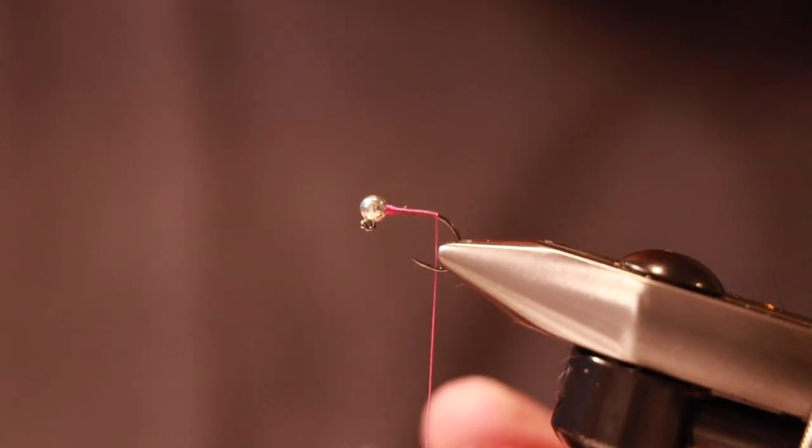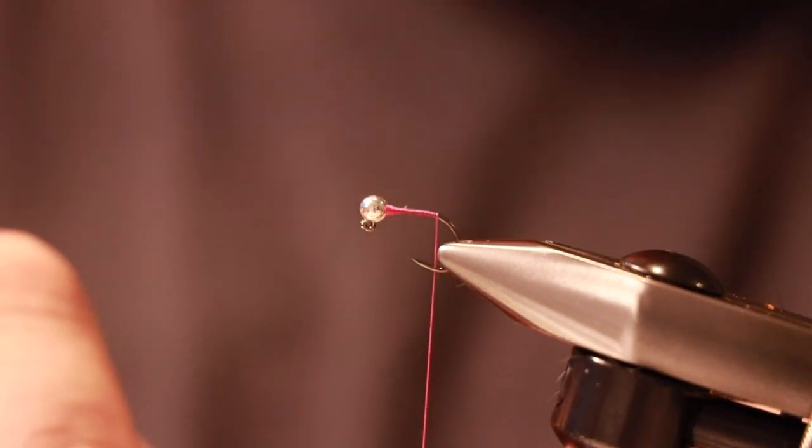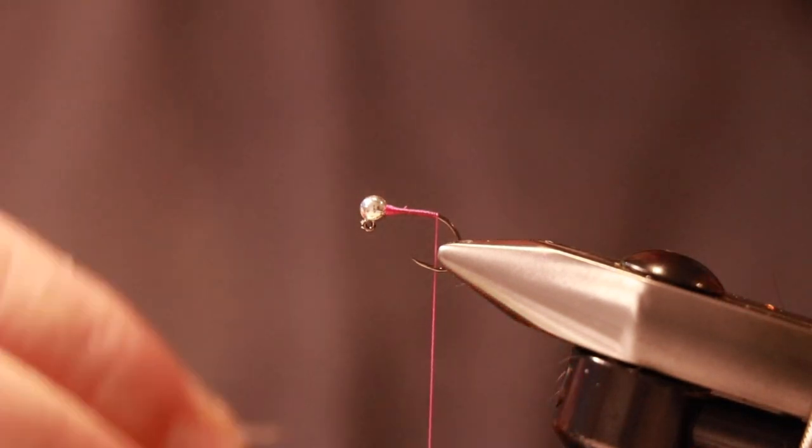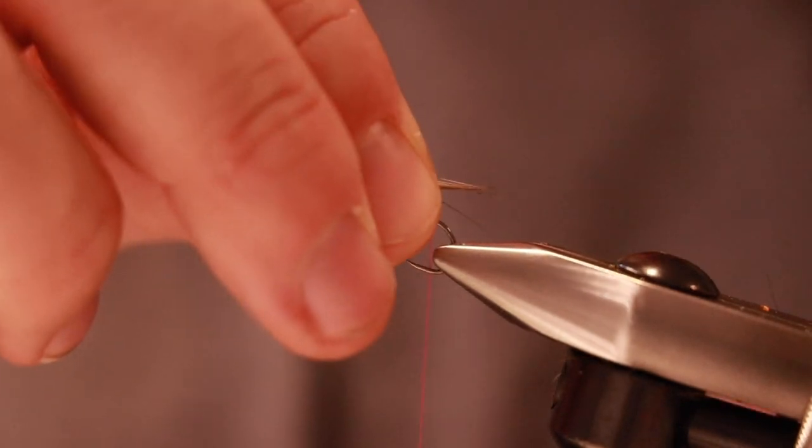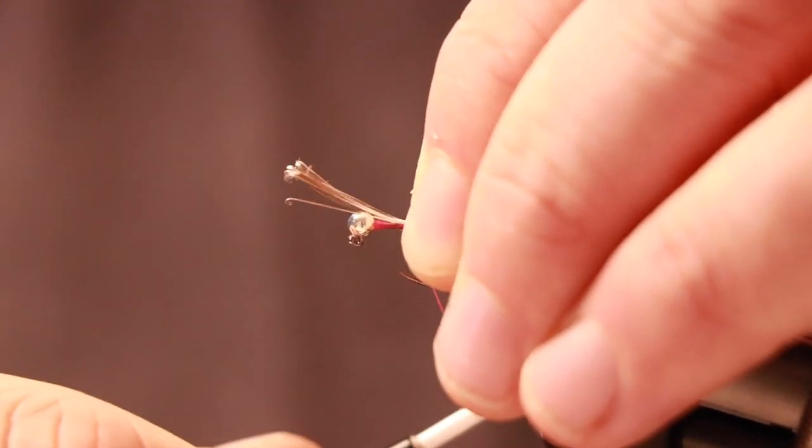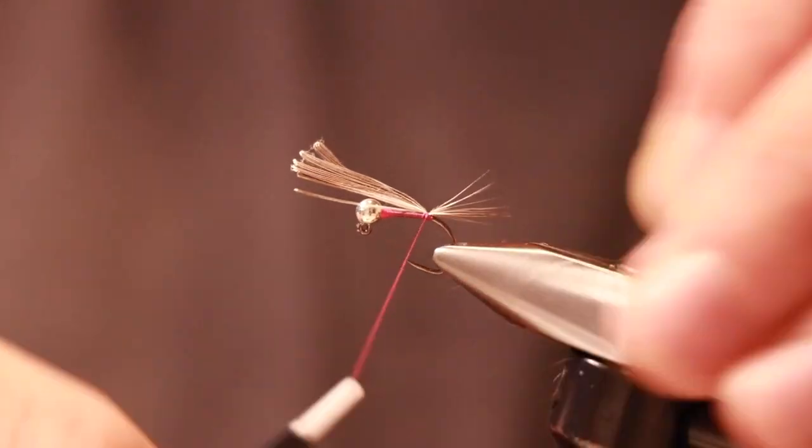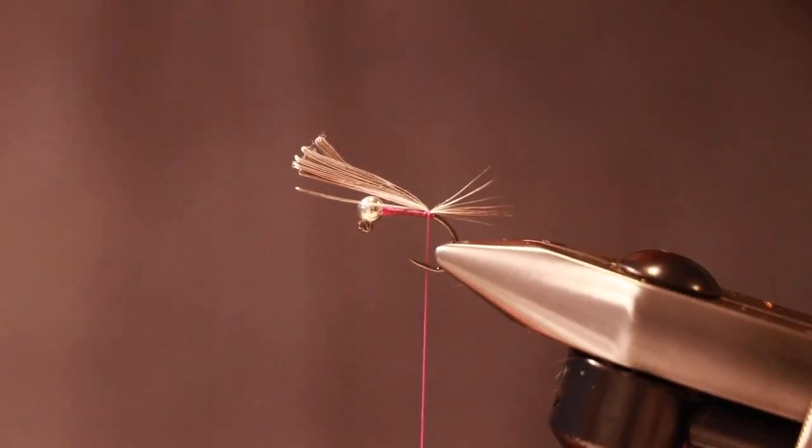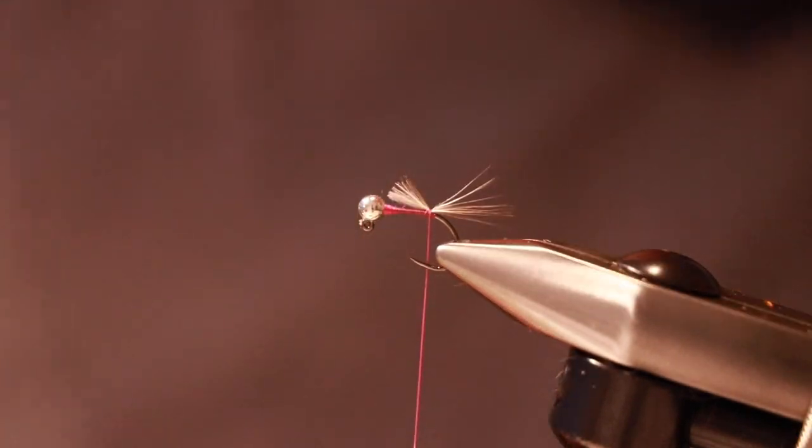So the next thing is your Coq de Leon. I'm going to take a few fibers, not going to count them, just what I think looks good. And I'm going to put a tail length that is no more than the length of the shank of the hook. Right on top with a pinching loop. A couple of turns to hold it in place. And then I'm going to trim that.